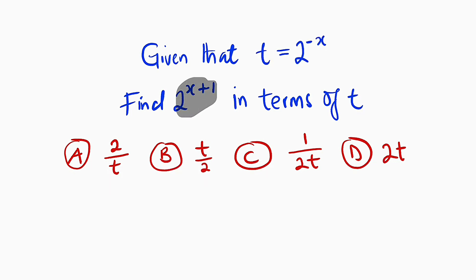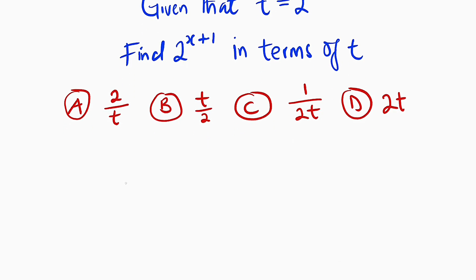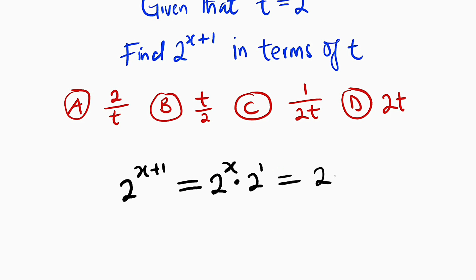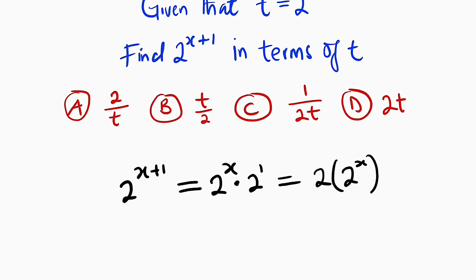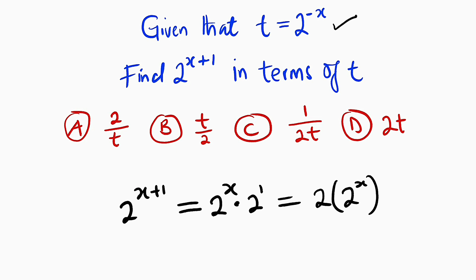Let me start by rewriting this expression. We have 2 raised to the power of x plus 1, and this is what we want to express. From one of the laws of indices, this can be written as 2 raised to the power of x multiplied by 2 raised to the power of 1, which turns out to be 2 multiplied by 2 raised to the power of x. What I will be doing here is making x the subject in this equation, then substituting it back to get our term in terms of t.